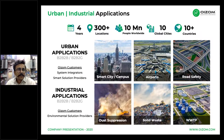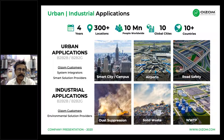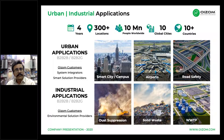In just four years, we are present in more than 300 locations monitoring data that affects over 10 million people across 10 global cities and 10 countries. We are promoting six types of solutions: three in the urban category — smart city and campus, airports, and road safety — and three in the industrial category — dust separation, solid waste, and waste oil treatment. Our partner-first approach makes the application either B2B2B or B2B2G.